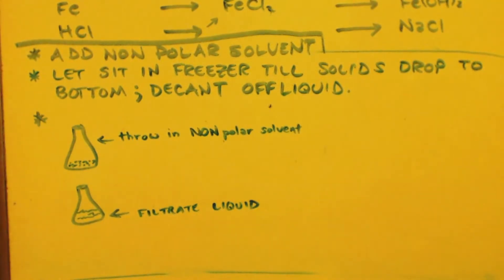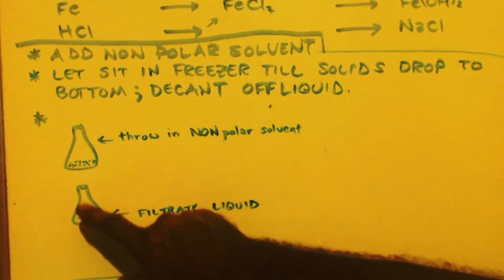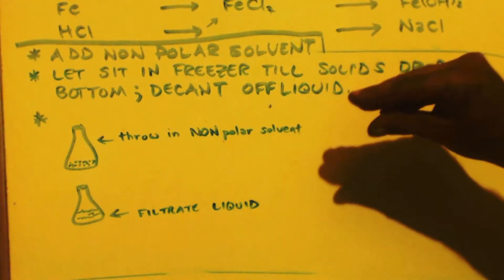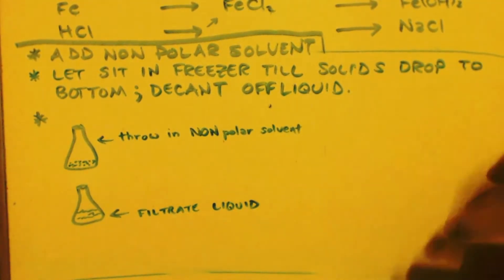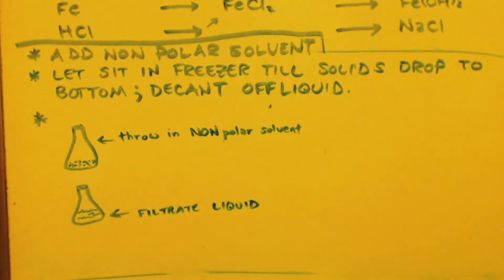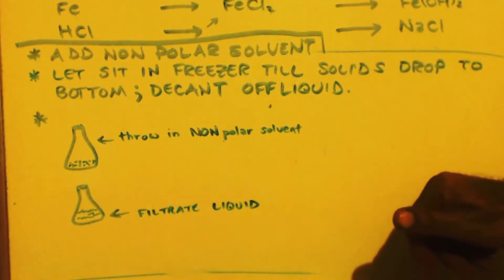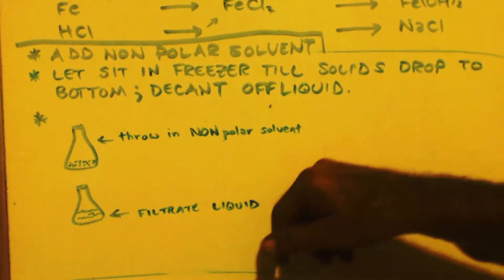Put it through your filter and then put that liquid into here. And then the cake, the solids in the filter, put some more non-polar solvent in there just to wash it out. Wash out them solids more. Suck that through so it's dry with a vacuum pump a little bit.